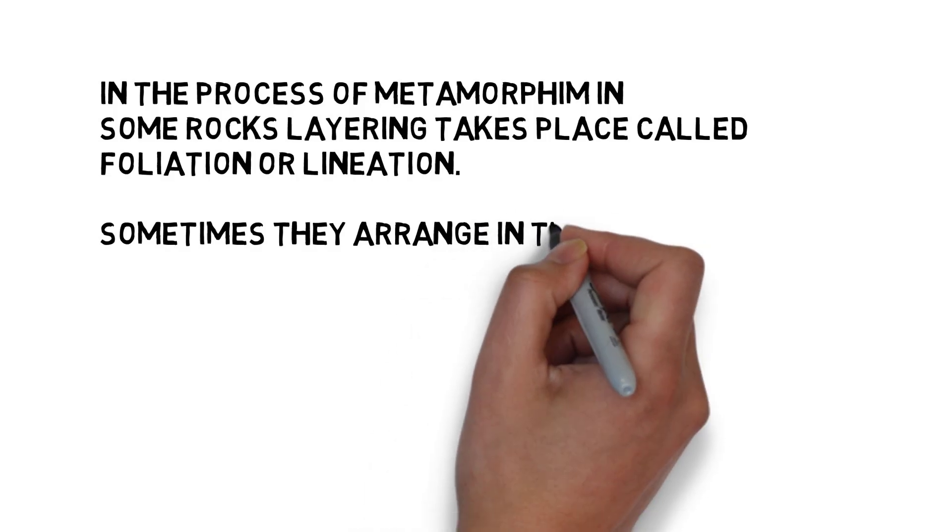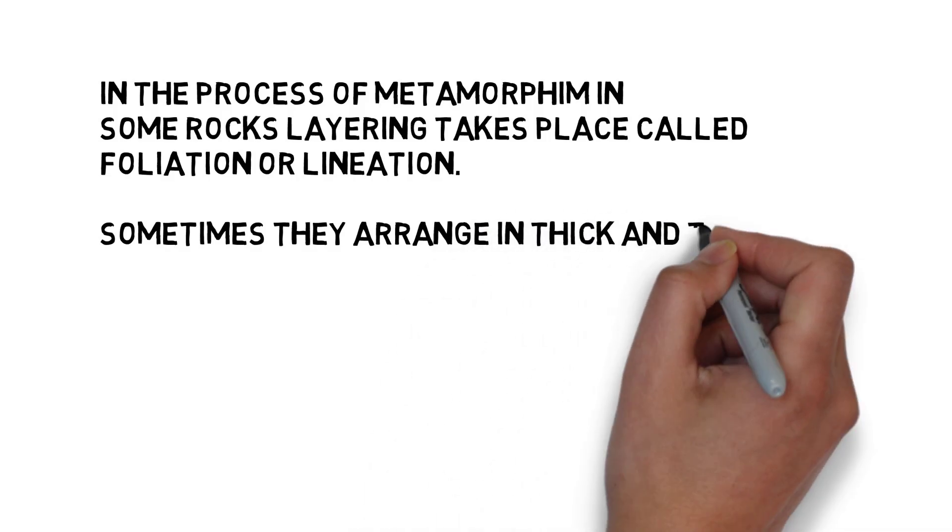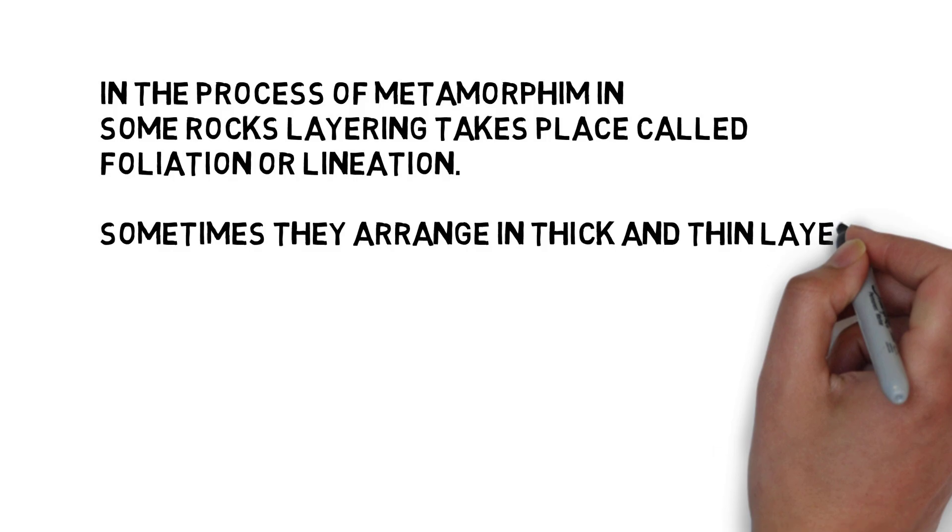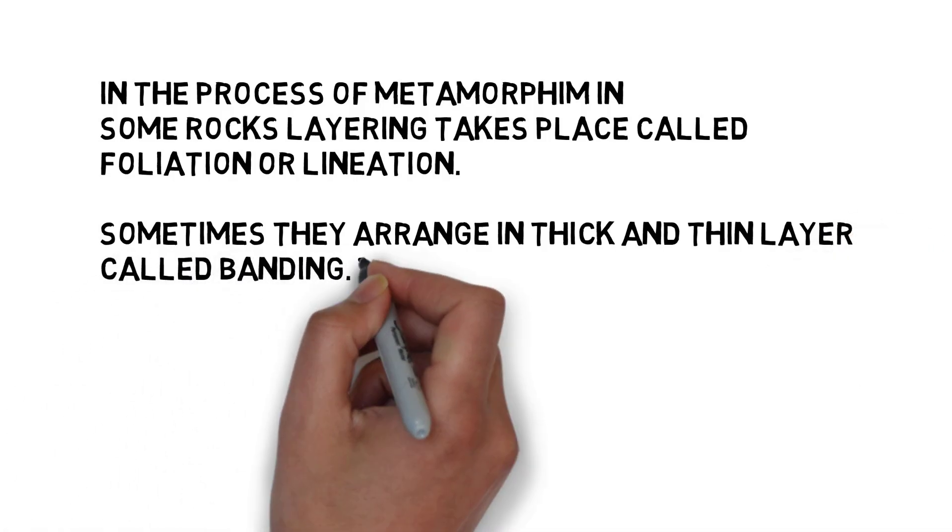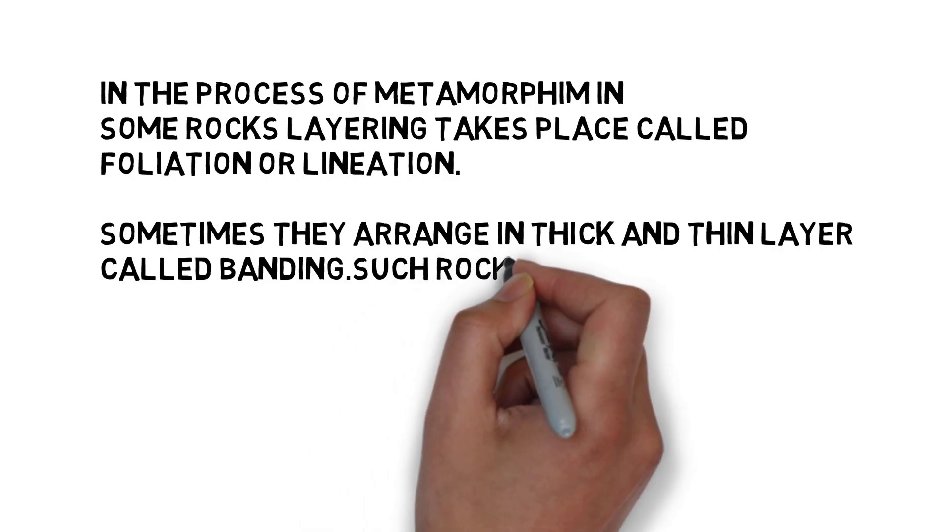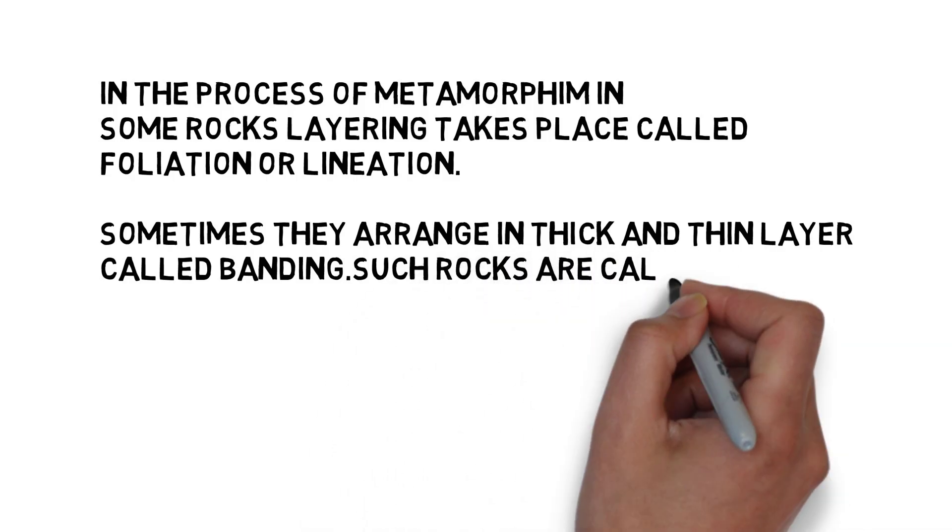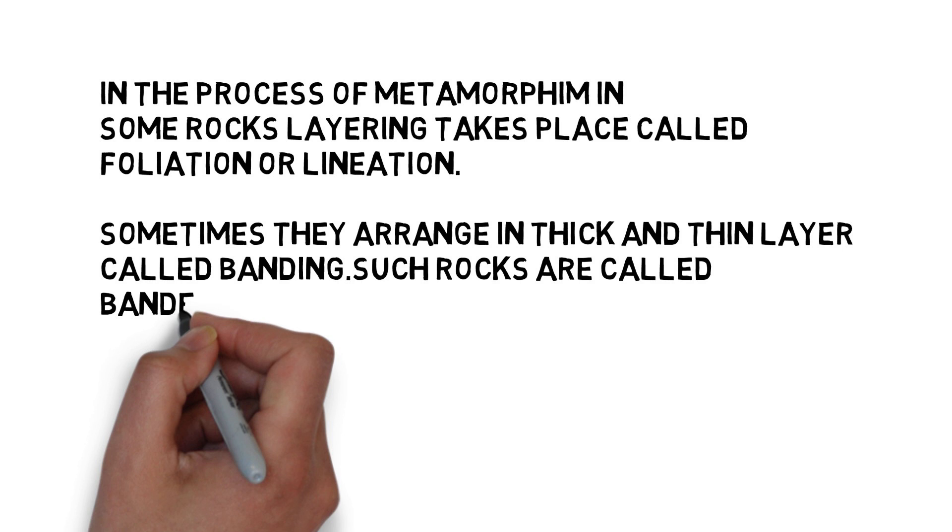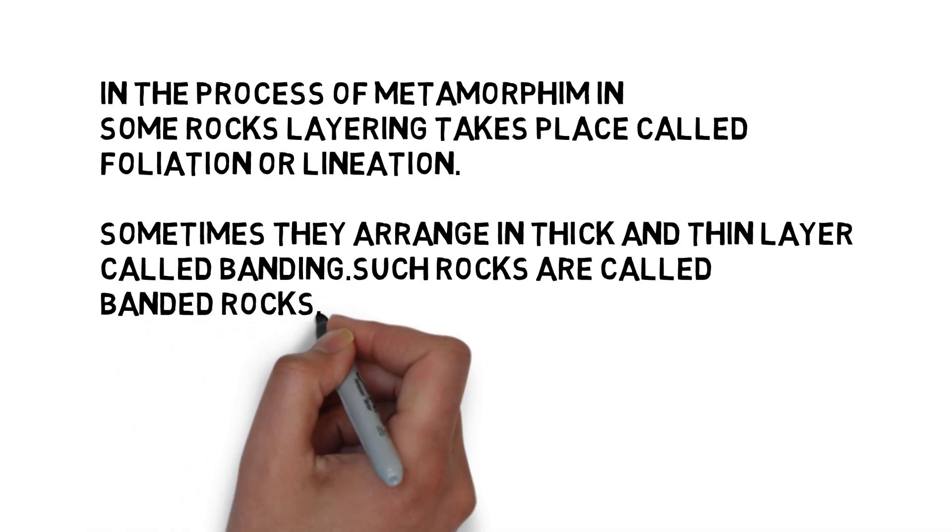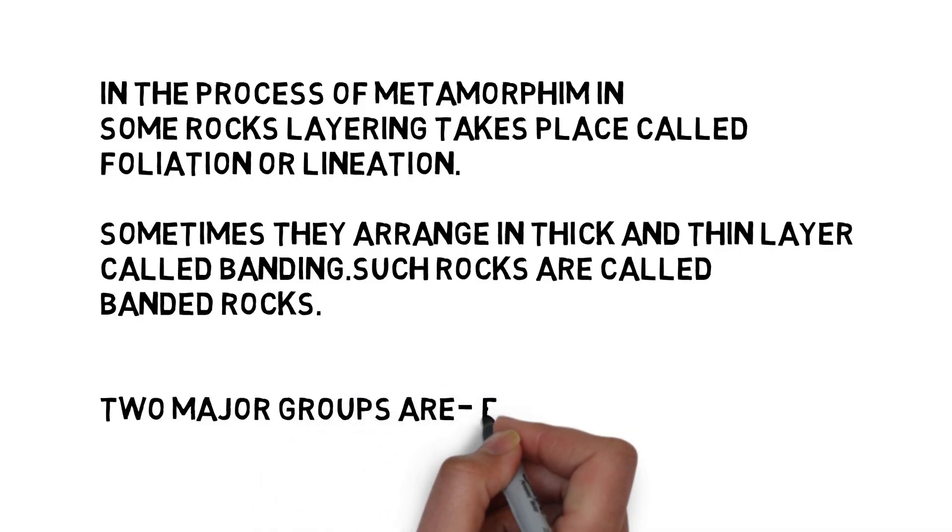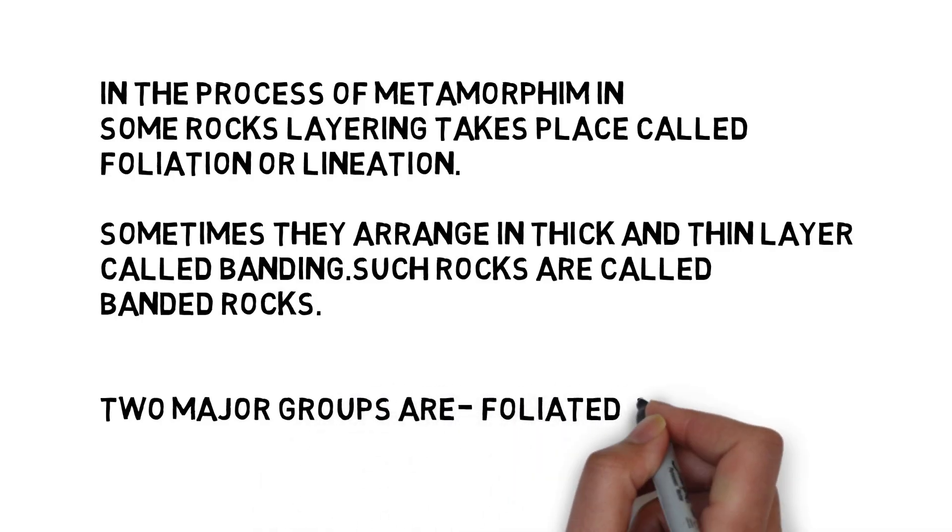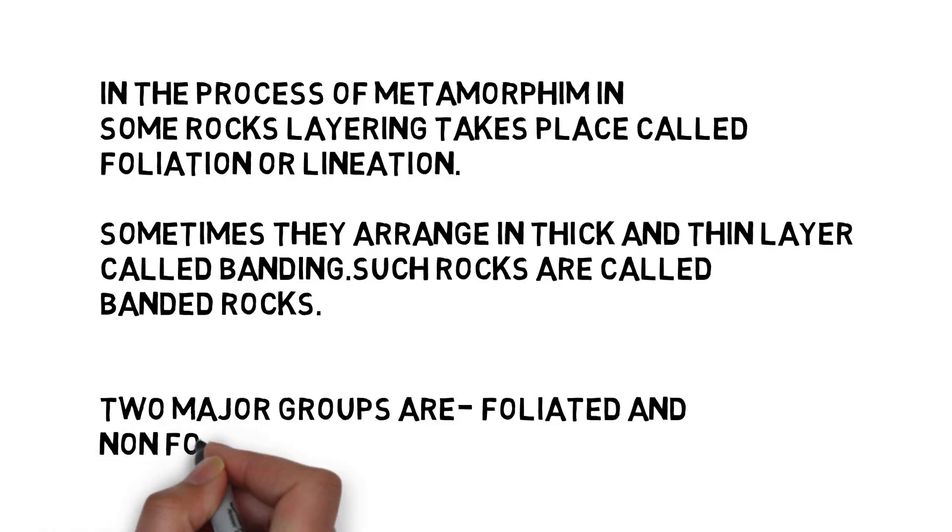Metamorphic rocks are classified into two major groups: foliated rocks and non-foliated rocks. Gneiss, granite, schist, slate, marble, quartzite, etc., are some examples of metamorphic rocks. As we can see, metamorphic rock is formed from both igneous rock and sedimentary rock, which means that rocks do not remain in their original form for long but may undergo transformation.